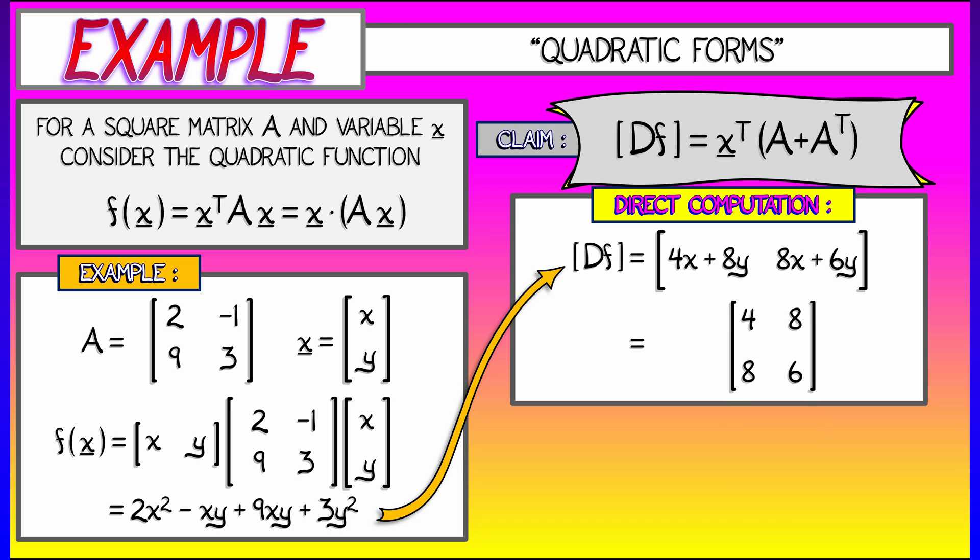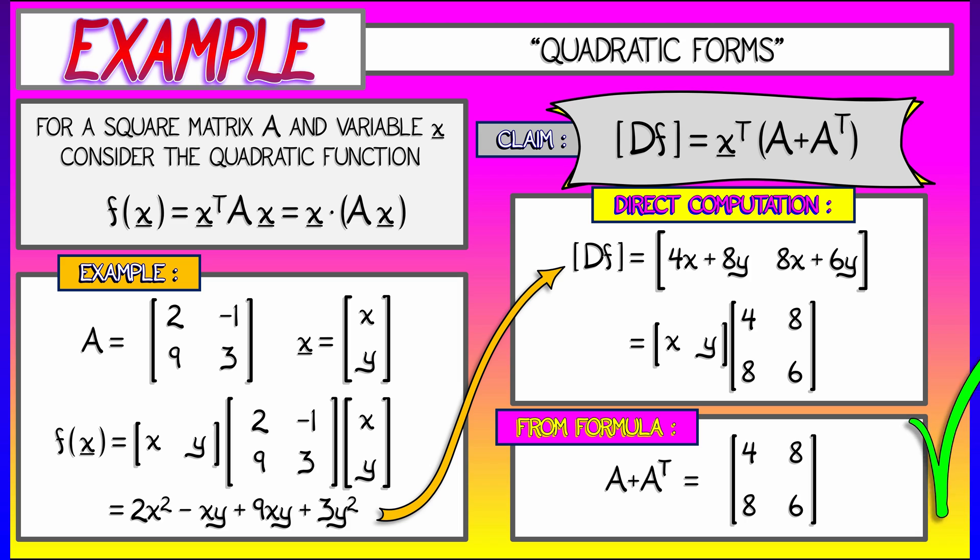If we pull out those coefficients, pack them into a 2 by 2 matrix, 4, 8, 8, 6, we get xy row vector times that.